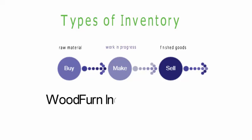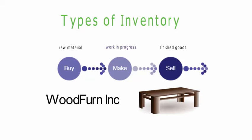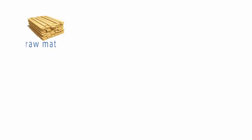Woodfern Inc. makes and sells wooden furniture which they deliver to their customers. In this example they are making a dining room table. Woodfern buys large pieces of wood from their supplier which will be used to make the table. The wood is stored in a warehouse in its original state and at this stage is known as raw material inventory.